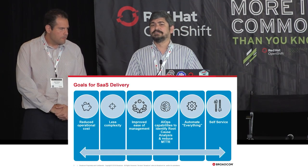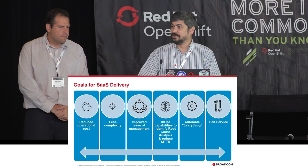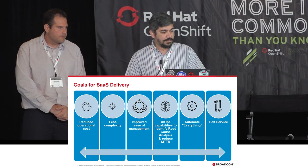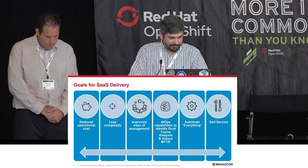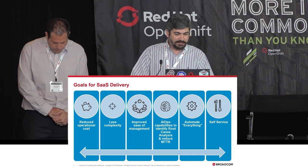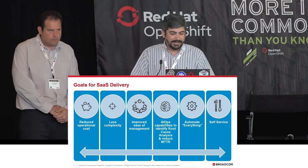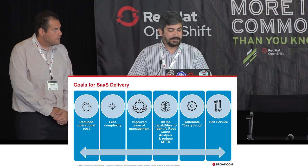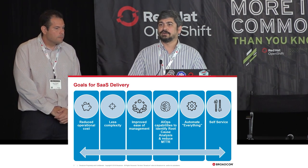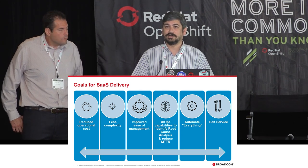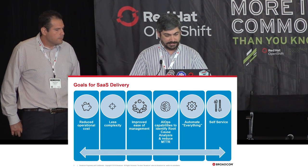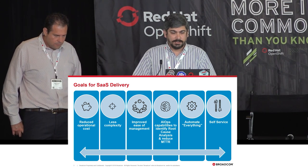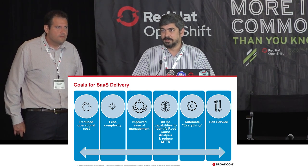How could we assimilate these products in a way where I don't need to linearly grow my teams? The goals we had for SaaS delivery were: make it less complex, easy to manage, and reduce operational costs. We were essentially looking for a common operating model, a common console where I can go look and manage all of these products. That's where OpenShift actually came into play.